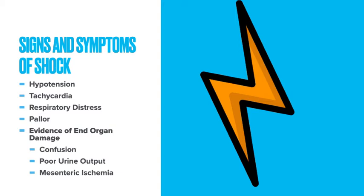As shock progresses, the patient is going to get respiratory distress as they're trying to take in more oxygen to perfuse their inadequately perfused organs. If it's due to blood loss leading to shock, the patients could look very pale, and there's going to be evidence of end-organ damage as shock progresses. This could be mesenteric ischemia, increased confusion, agitation, or even coma.